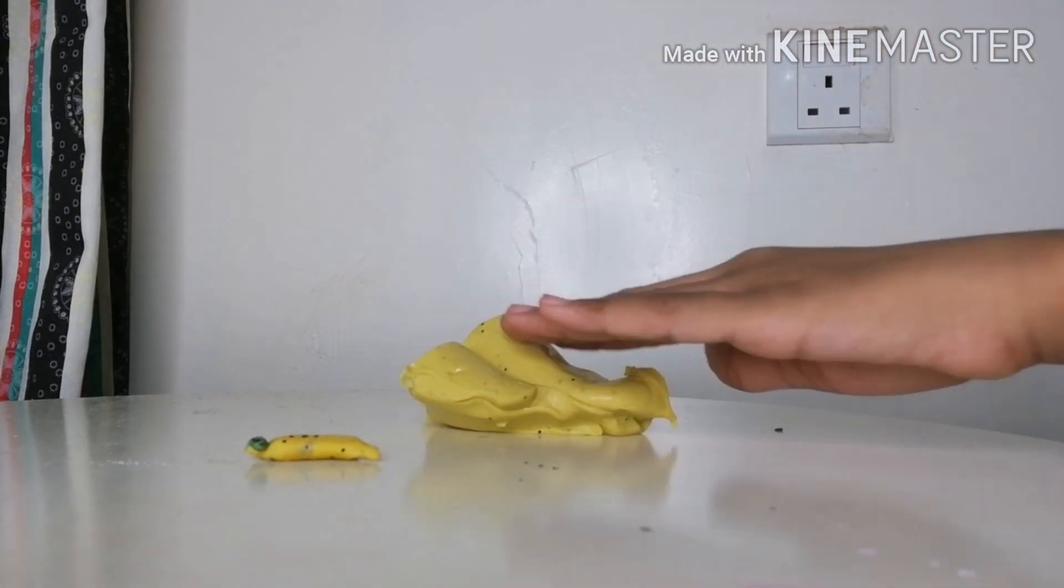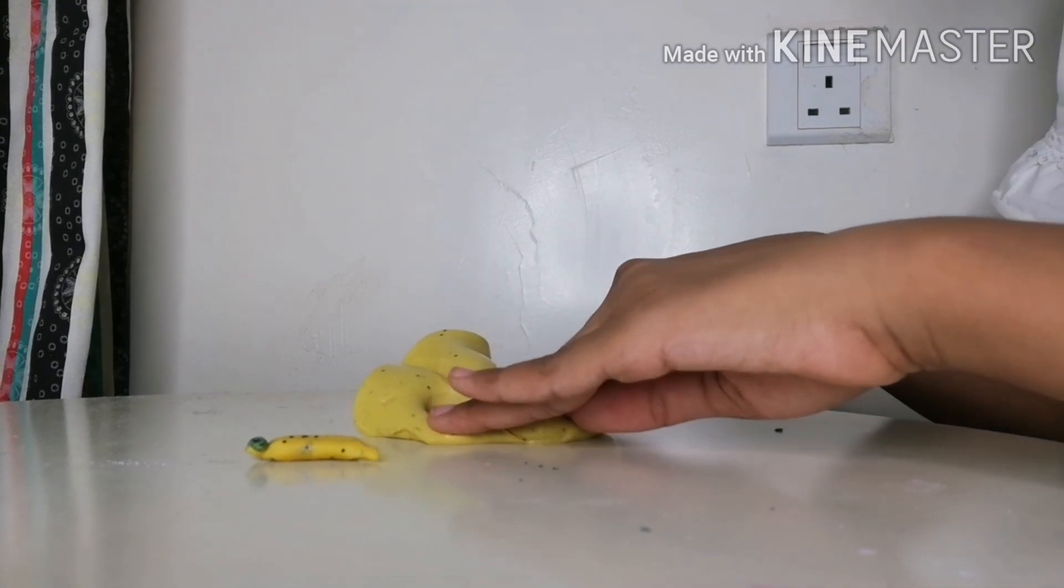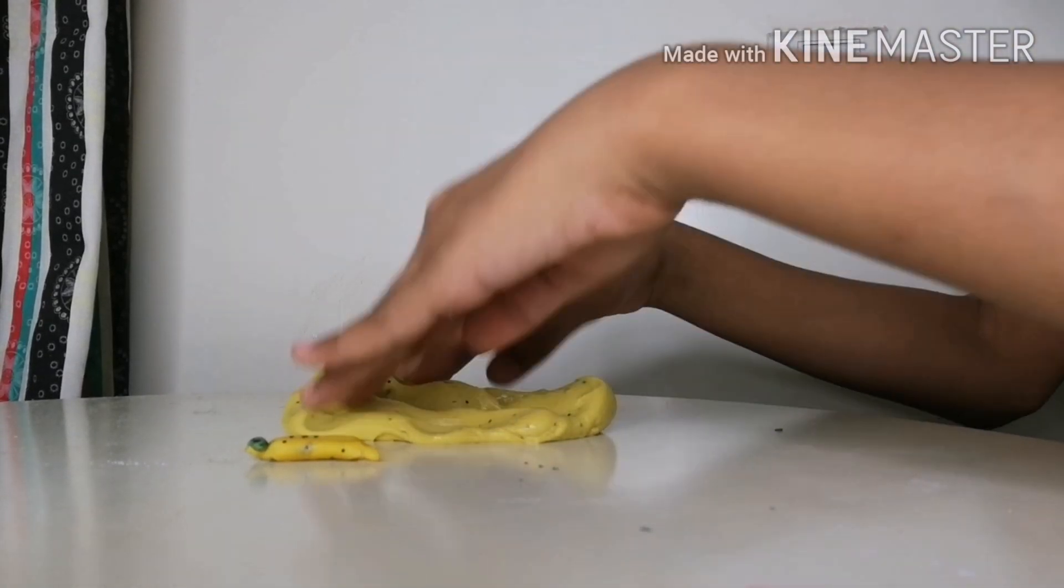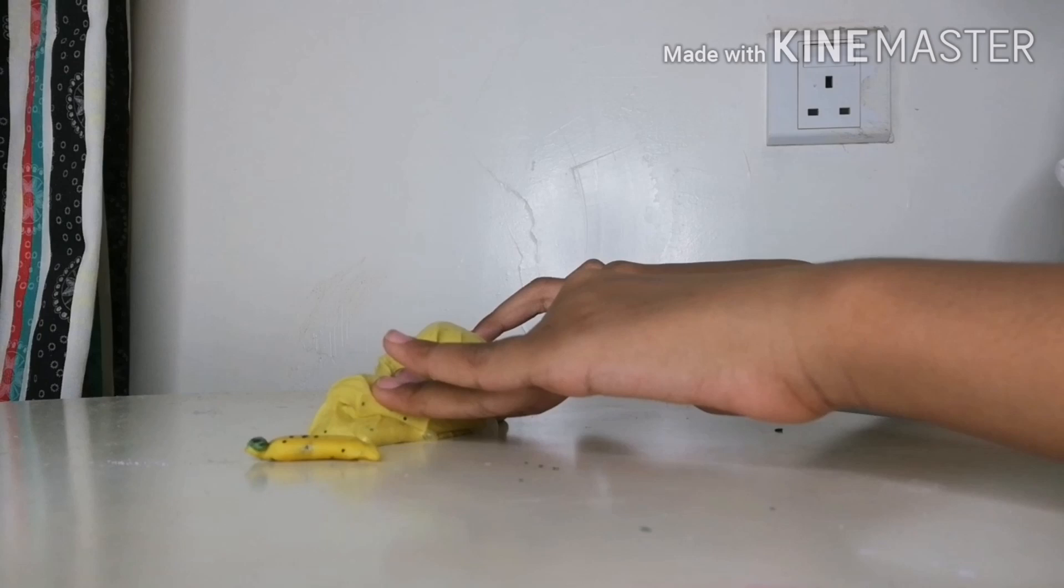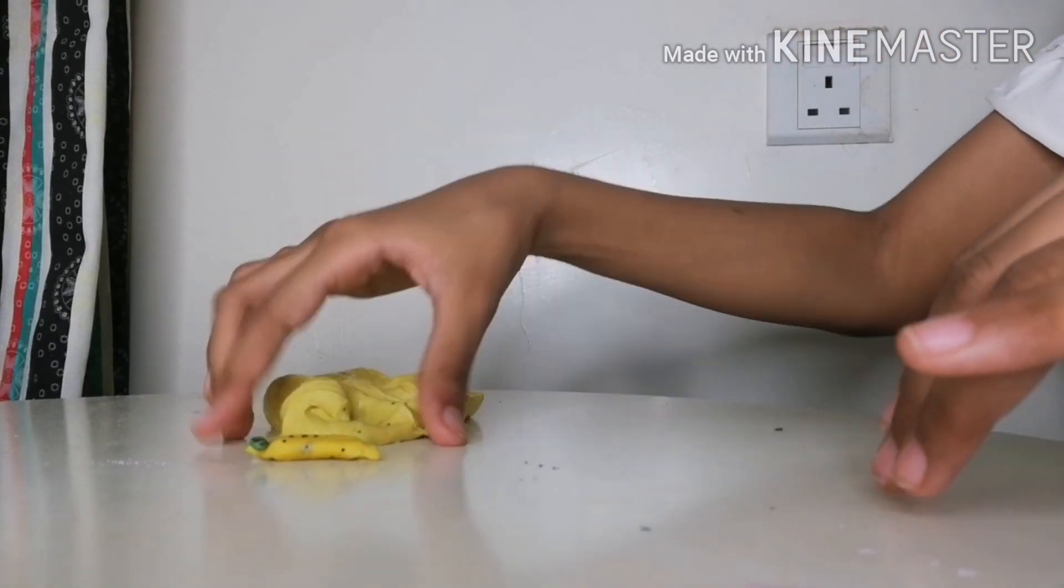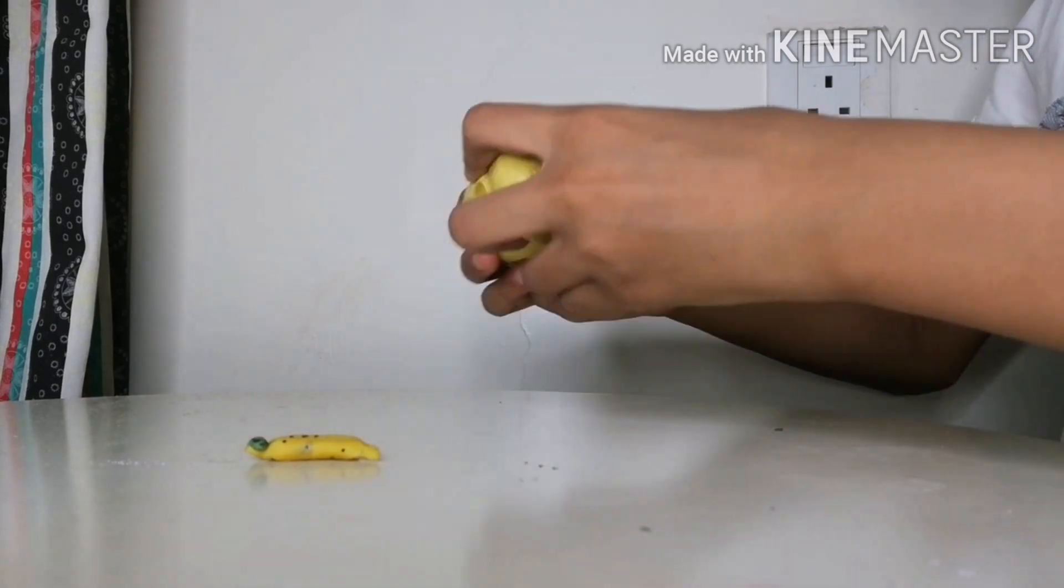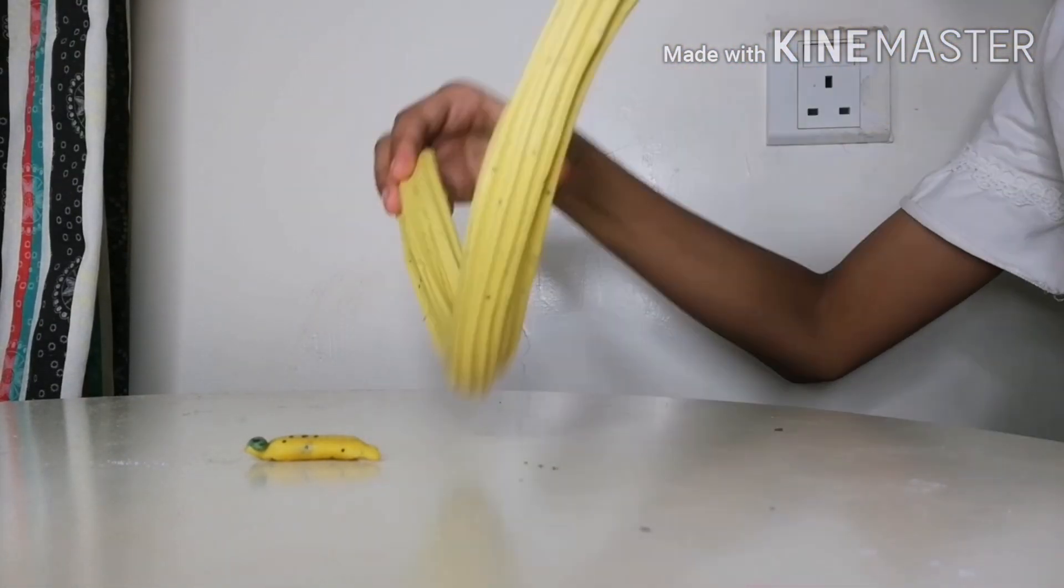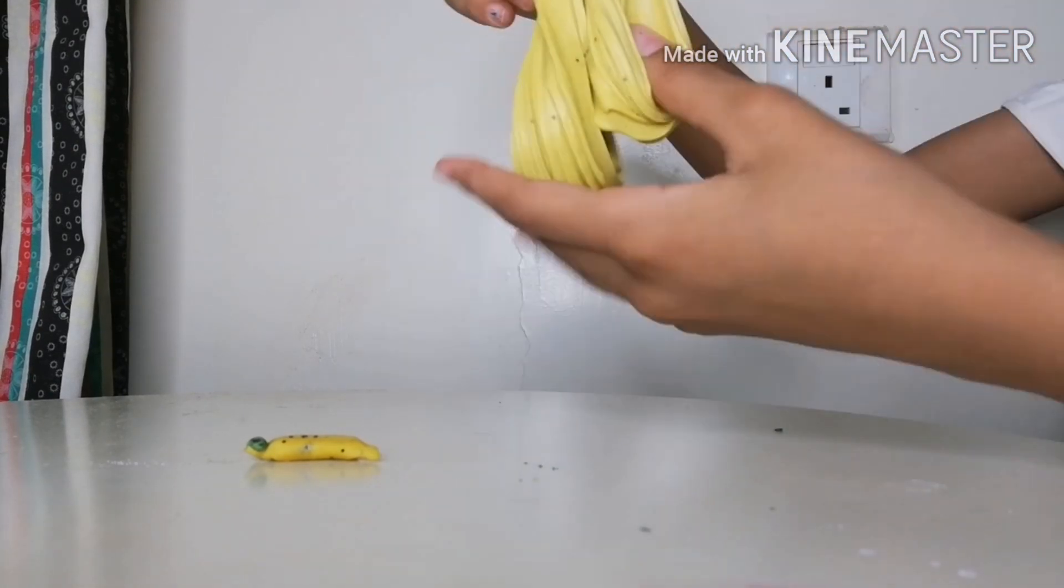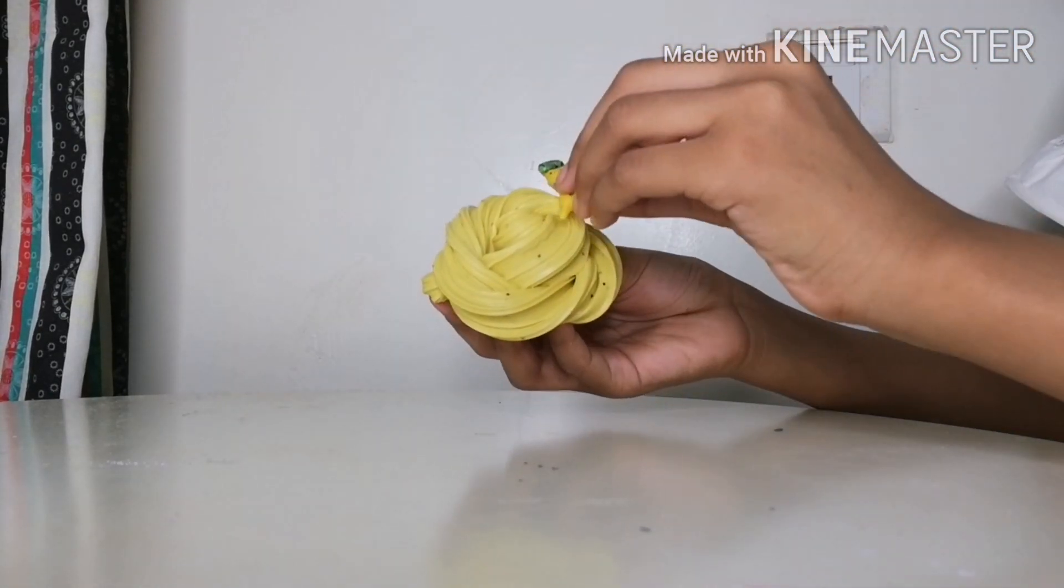First is this banana themed slime. By the way, I made this banana charm out of homemade clay. I'll show you down in the description the recipe. The slime has a vibrant yellow color as you can see. I added some black glitter to demonstrate the black dots in the banana and the texture is a butter.